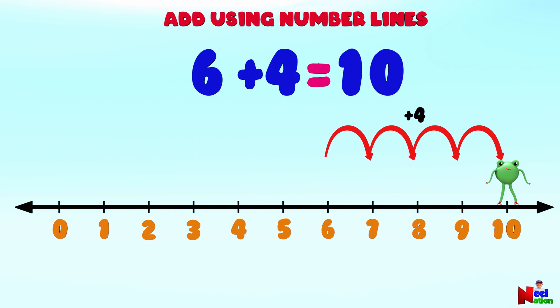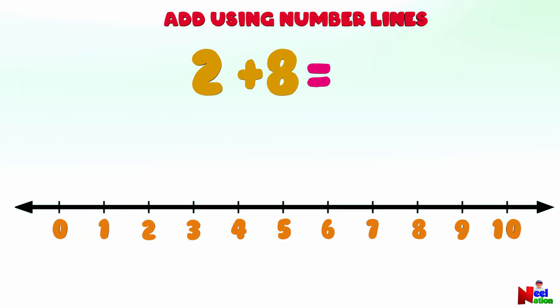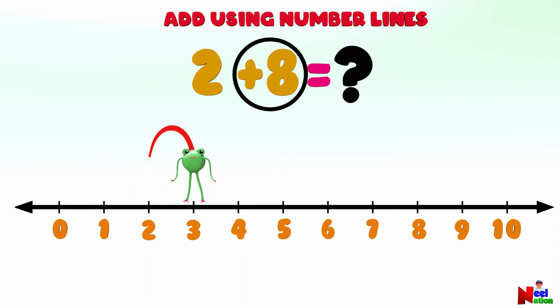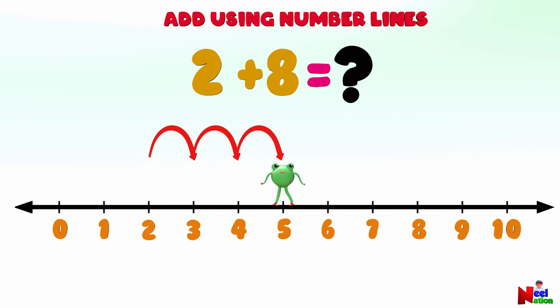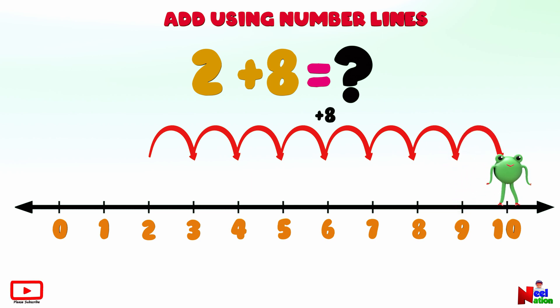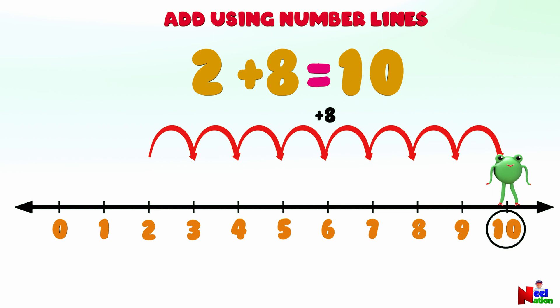Six plus four equals ten. Great job! Now, what is two plus eight? Can you find two on the number line? Starting from number two, Mr. Lutu will jump eight points forward to the right — one, two, three, four, five, six, seven, eight. Where is Mr. Lutu? Number ten! Two plus eight equals ten.